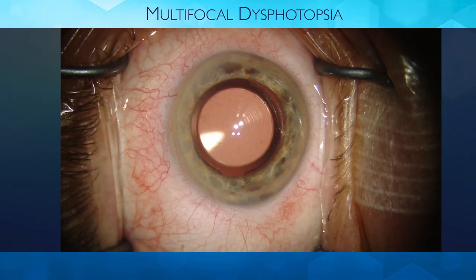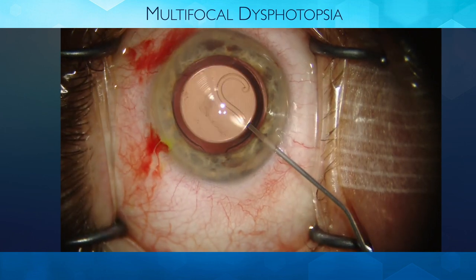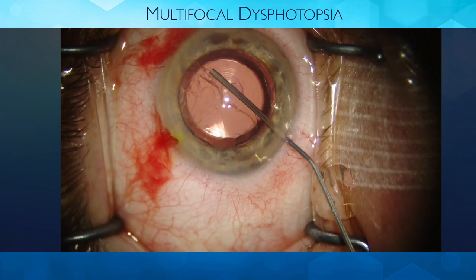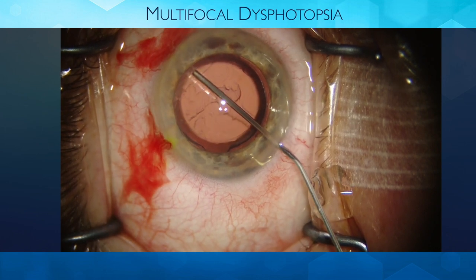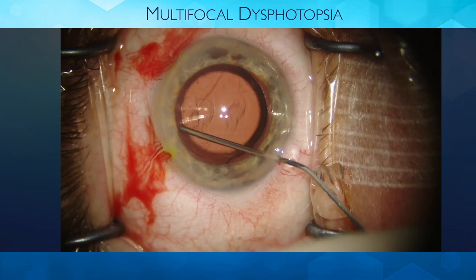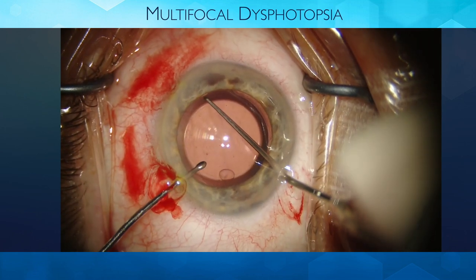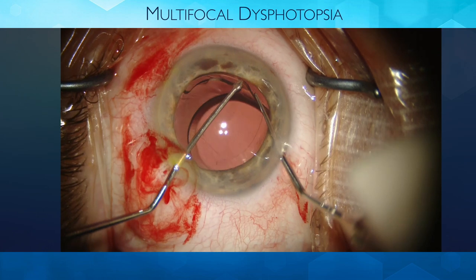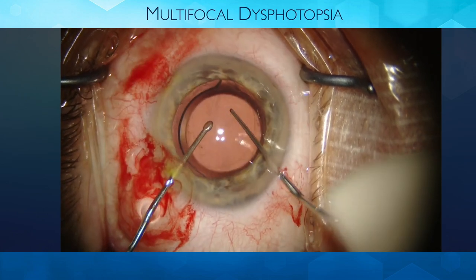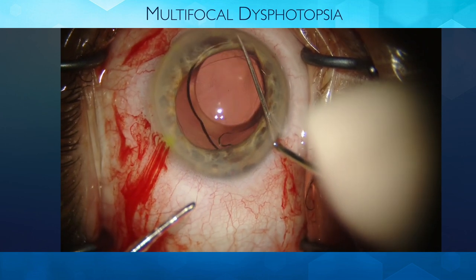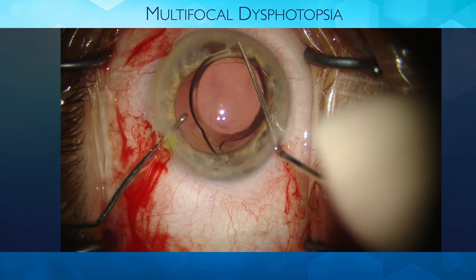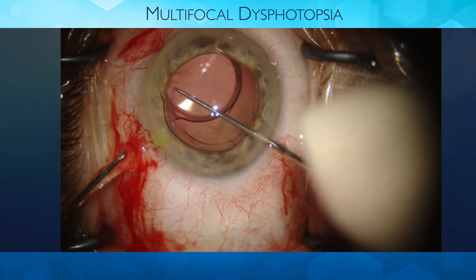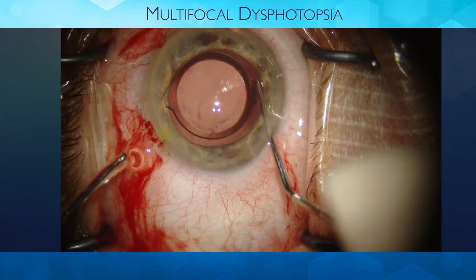Let's get into bag-to-bag exchange. One of the most common reasons we're exchanging IOLs is multifocal dysphotopsia. Even with the best intentions and the perfect candidate, some patients do not do well with glare and halos after surgery, and it's our obligation to help them. What you're seeing here is visco-dissection — you can use a cohesive or dispersive viscoelastic. Cohesive comes out a lot easier. Notice that we're not rotating initially; we're pulling it anteriorly and getting a sense for how fibrosed the haptics are within the capsule. Then we go after the other end using microsurgical forceps or a spatula, making sure to have viscoelastic above and below the IOL to protect the capsule.